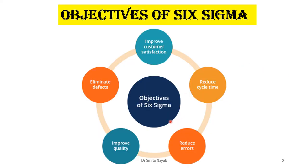The objectives of Six Sigma are: to bring about a reduction in the cycle time or processing time, to eliminate or reduce errors, to improve quality, to eliminate defects, and finally to improve customer satisfaction.